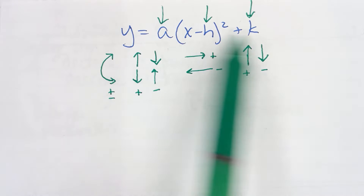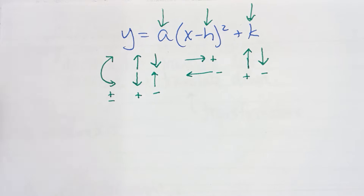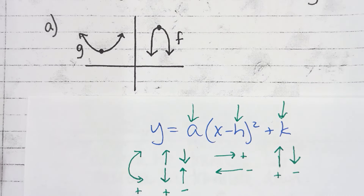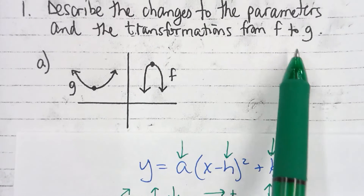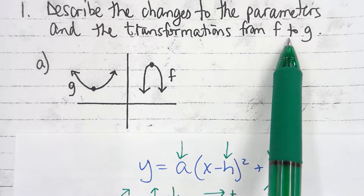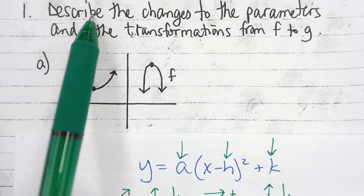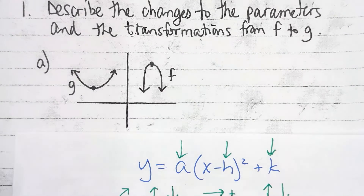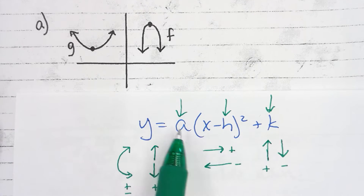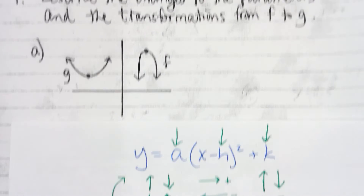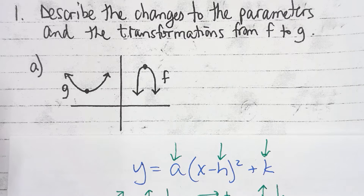A controls the curvature, h is side to side, k is up and down. For question 1a, we're going from f to g. You're being asked two things: the changes to the parameters, and the transformations. Make sure you understand the difference. The changes to the parameters are what's happening to your a, h, and k. The transformations are the physical things going on with your parabola — stretching, shrinking, left and right, and so on.